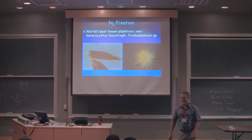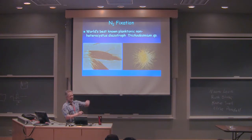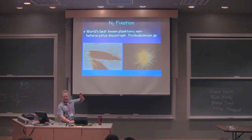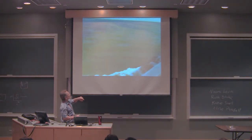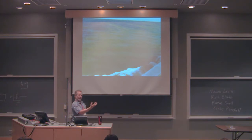Trichodesmium has been focused upon mainly because it produces these kind of weird colonies — these tufts and puffs. You can have these trichomes as individuals floating around in the ocean. But when there is a trichodesmium bloom and conditions are calm, you see something like this. Do you see the sort of brownish water here? These things float, and so a ship traveling through the ocean sees this brown spot and thinks something's going on here.